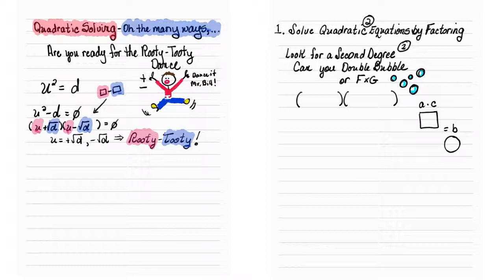Quadratic solving. Are you ready for the rooty-tooty dance? Anyway, basically the reason why you have a plus minus is because of the difference of two squares. Let's say we have a squared function like u squared equals an answer d. We would just take it and have a minus.